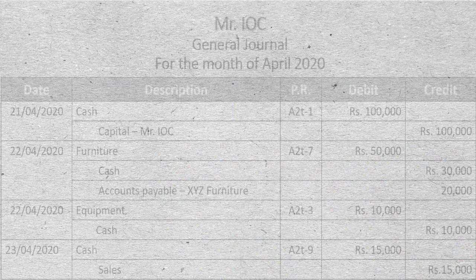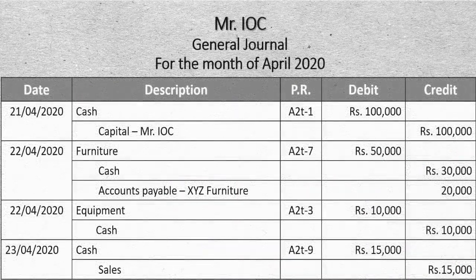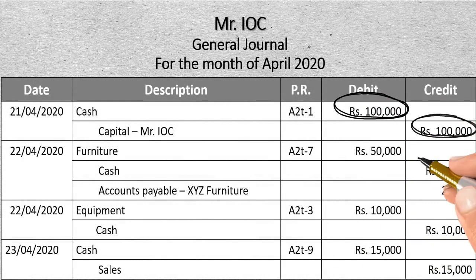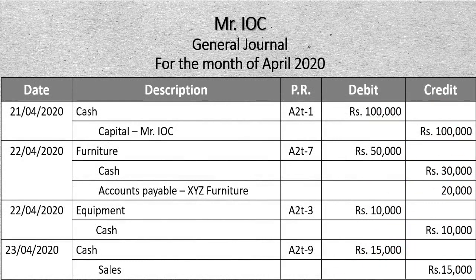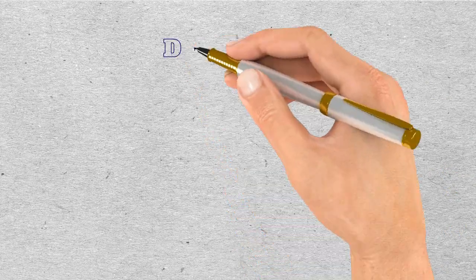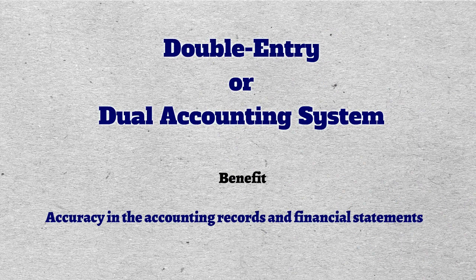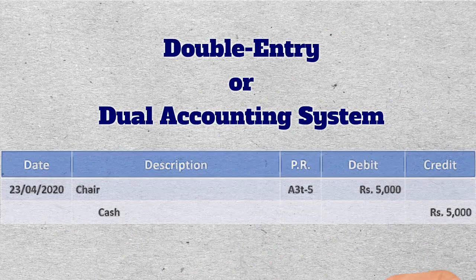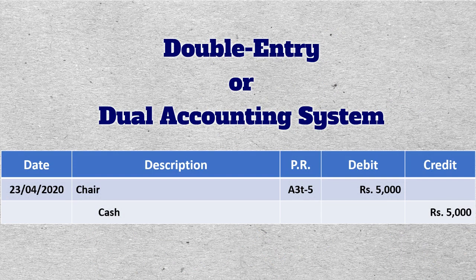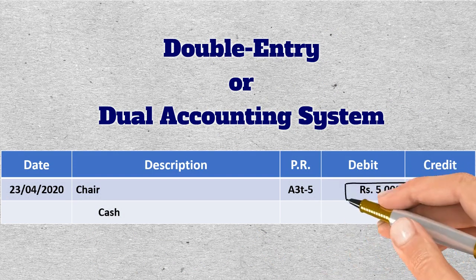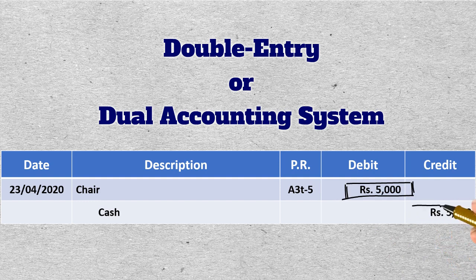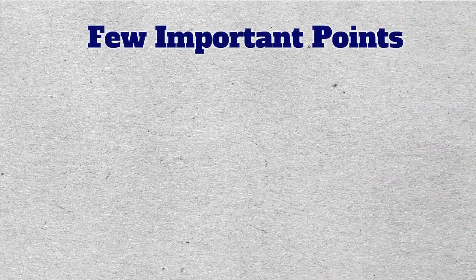This clearly shows that two or more accounts are involved in a business transaction, so we must debit at least one account and credit at least one account. The system of recording both aspects of the business transaction is known as the double entry or dual accounting system, which provides accuracy in accounting records and financial statements. For example, you bought a chair by paying 5,000 rupees — in the dual accounting system you record the buying of the chair on one side and the payment of cash on the other side, recording both the debit entry and the credit entry of the transaction.